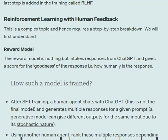Reinforcement Learning with Human Feedback involves two major components: one is a reward model, and the other is a reinforcement learning algorithm that uses this reward model to generate rewards for training purposes. Let's understand what the reward model does first.